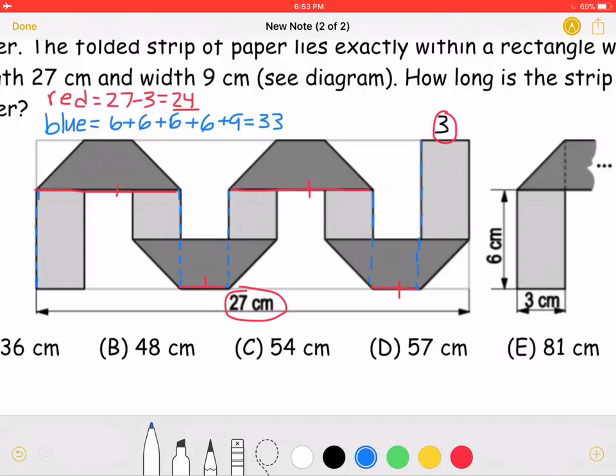The blue, as we can see, has length 6, as you can see in the diagram, another 6, another 6, one more 6,